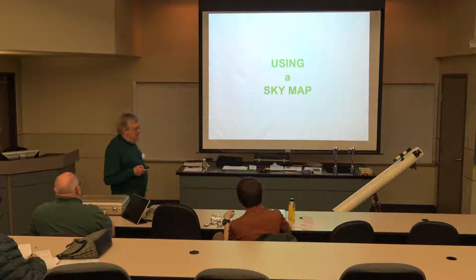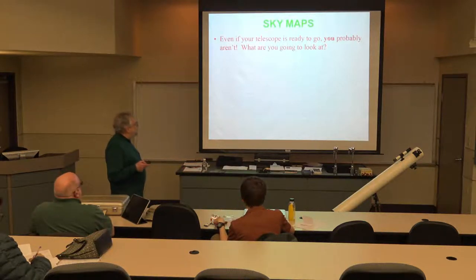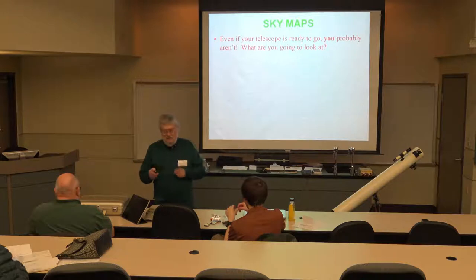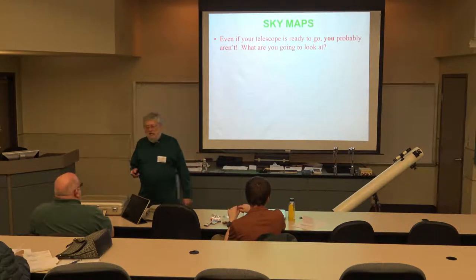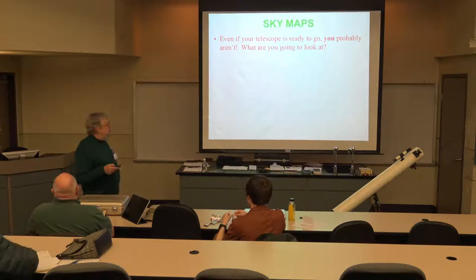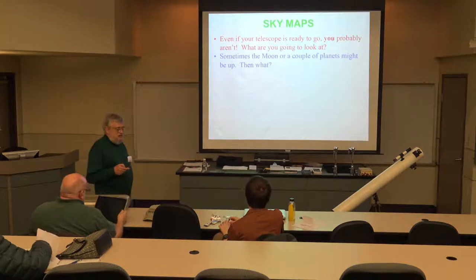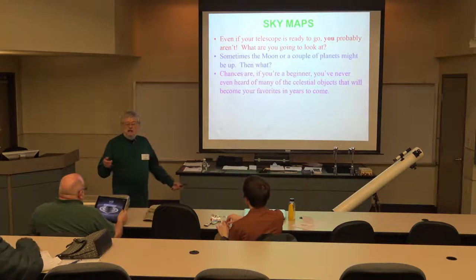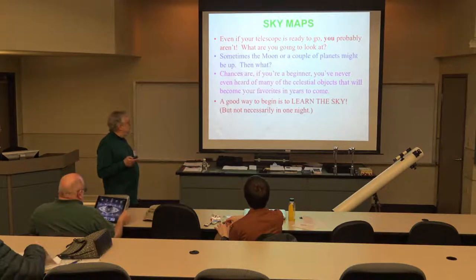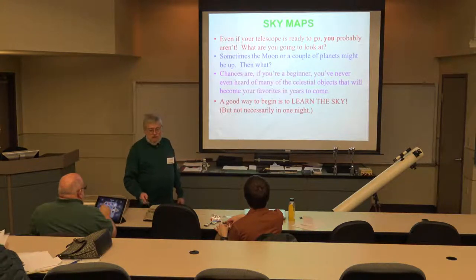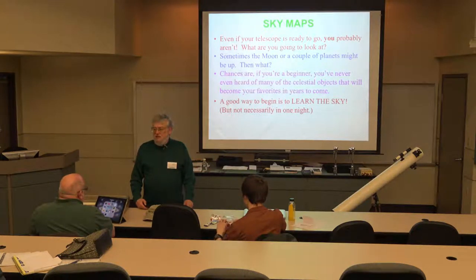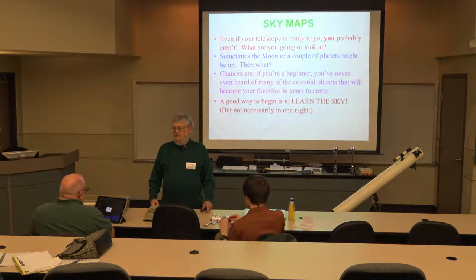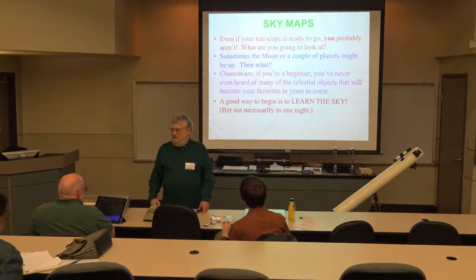You can avoid that embarrassment by at least knowing whether things are up or not. Using a sky map is a lot easier than you might first think, because it's the link between not being able to see anything and being able to look through the telescope. Looking at a low-resolution star map like the ones I just handed out will give you a good idea of what things are going to be up. You don't have to learn the whole sky in one night. There are 88 constellations altogether — some aren't even visible from here, others aren't worth looking at: two fifth-magnitude stars, that's not worth your time.